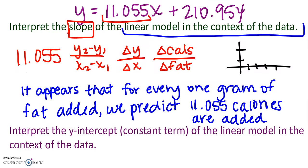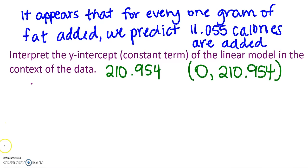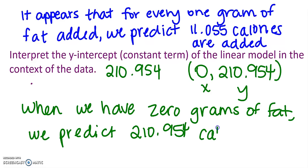All right, the sentence says interpret the y-intercept. Well, our y-intercept is this number right here, 210.954. We learned in an earlier video that a y-intercept is written in the form zero comma, because we have an input of zero. In this case, if our x value is zero, so when we have zero grams of fat, we predict 210.954 calories. All right, and again, we're using that appears and predicts. It's just kind of language to make sure that we know we're talking about a model and we know that we're not talking about hard and fast data. We've used some really good data points to create this model, but the model itself is not necessarily a very strict rule for mathematics.